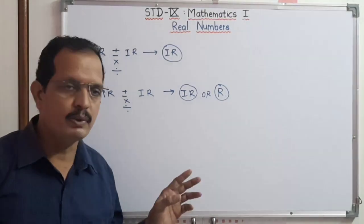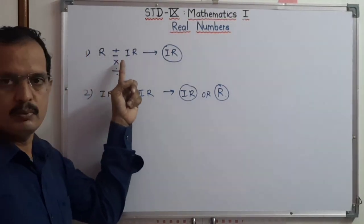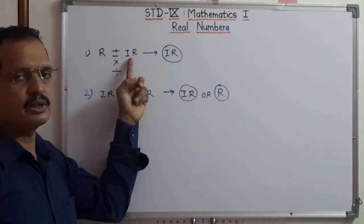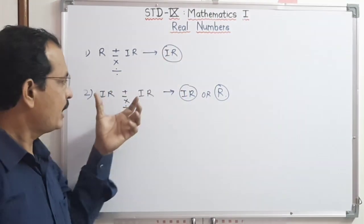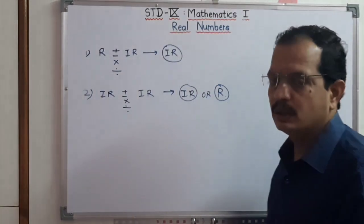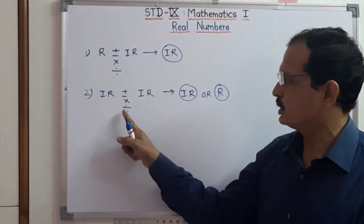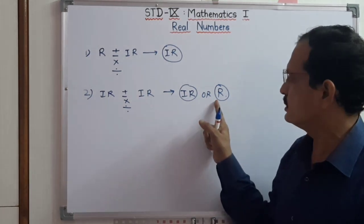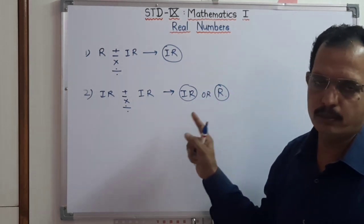Students, remember: if we do addition, subtraction, multiplication, or division with a rational number and an irrational number, the final answer will be an irrational number. And if we do addition, subtraction, multiplication, or division of two irrational numbers, then the answer may be an irrational number or it may be a rational number. These are the properties of irrational numbers.